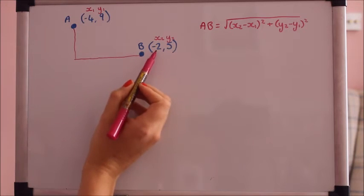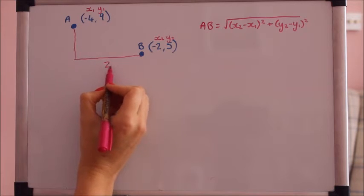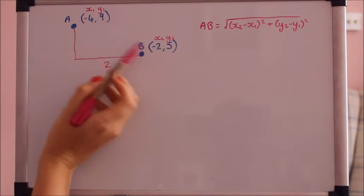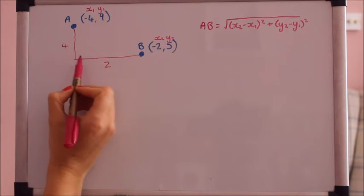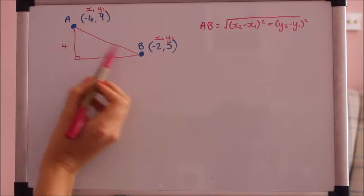Working out the difference between minus 4 and minus 2 that's 2 along there. And between 9 and 5 is 4. So as I said it is just Pythagoras' equation.